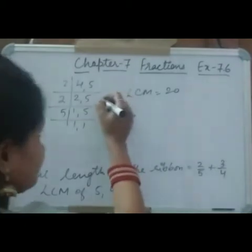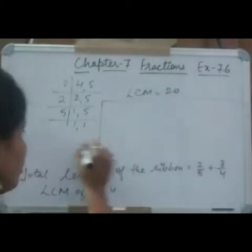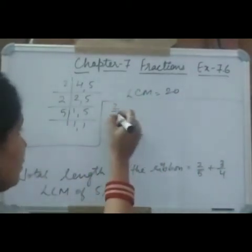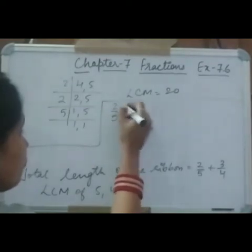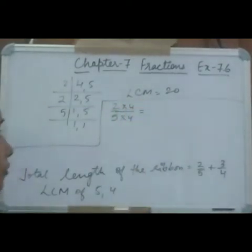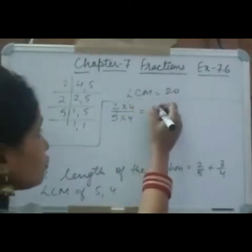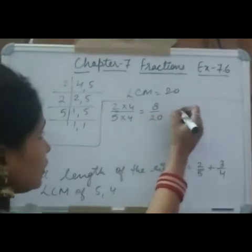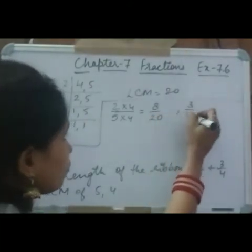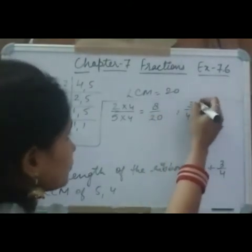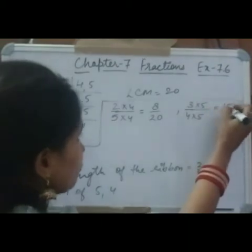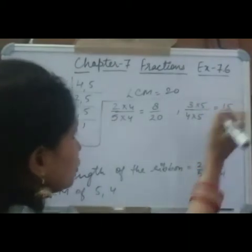Now we will make the denominators the same. For 2/5, multiply both numerator and denominator by 4: 2 fours are 8, 5 fours are 20 — giving 8/20. For 3/4, multiply both by 5: 3 fives are 15, 4 fives are 20 — giving 15/20.